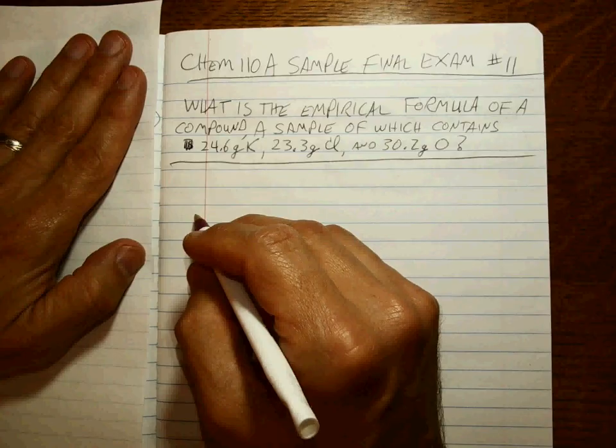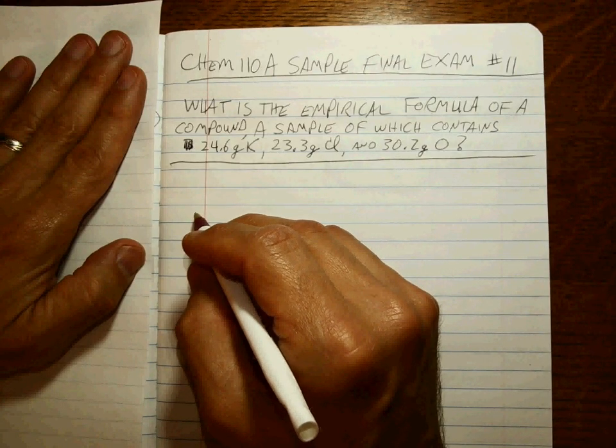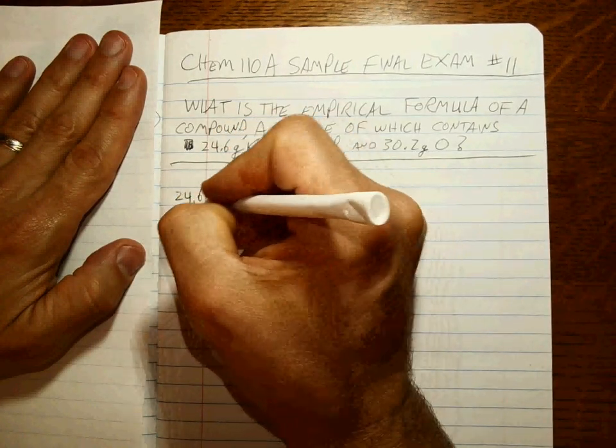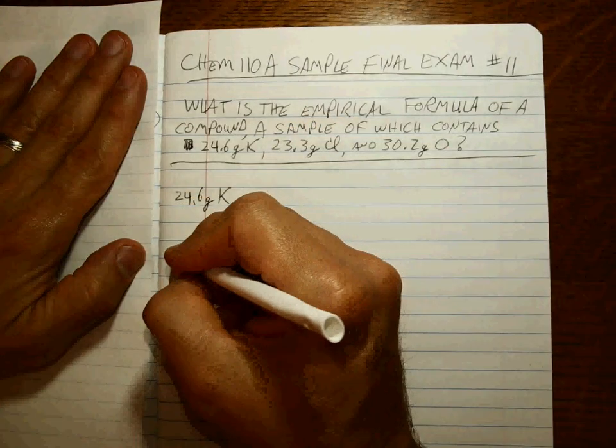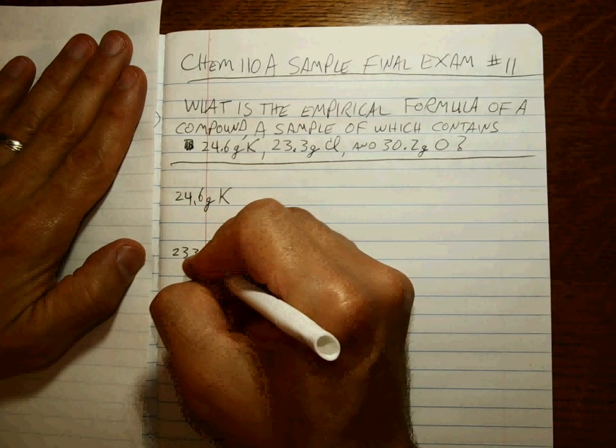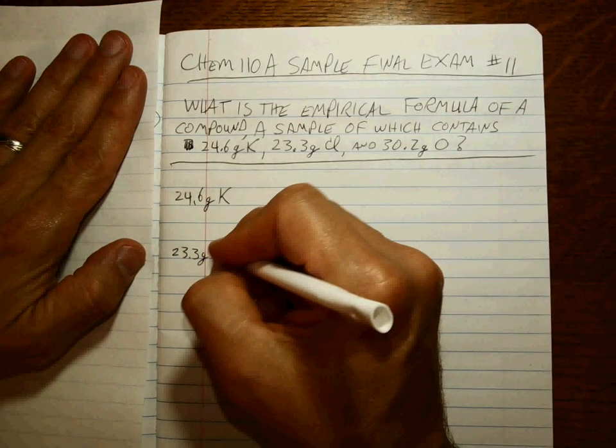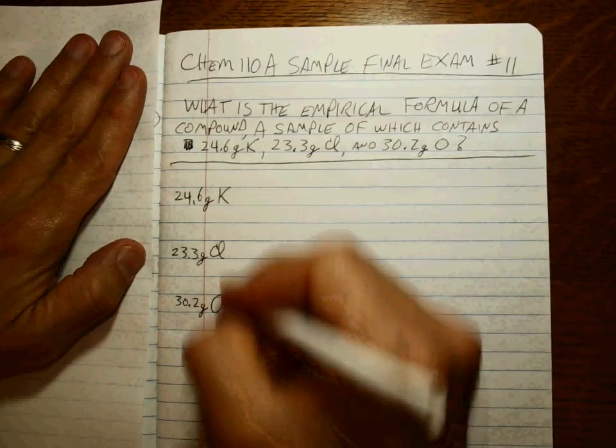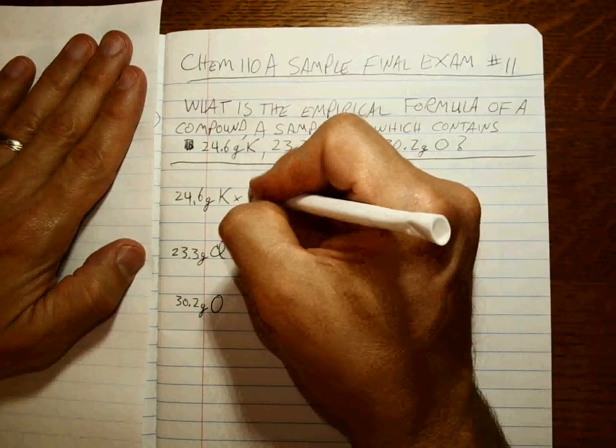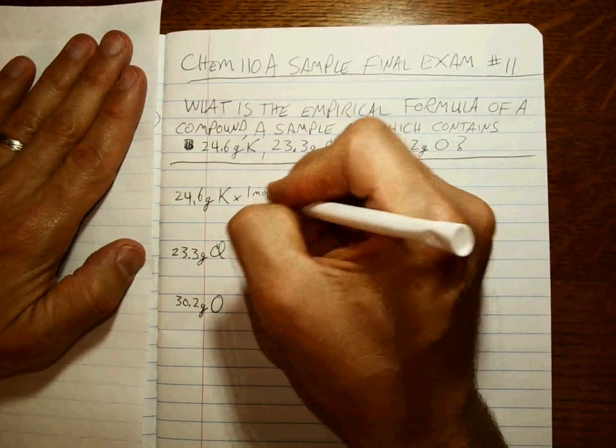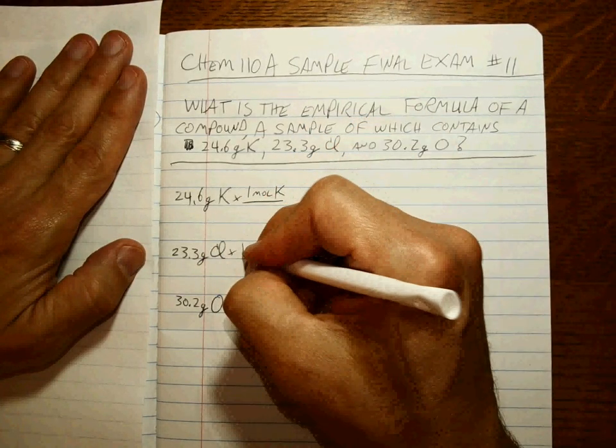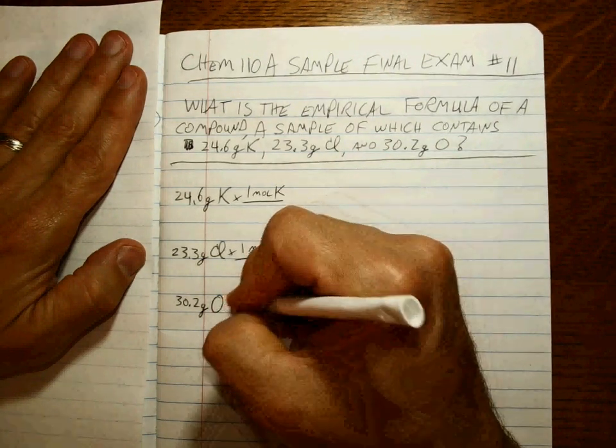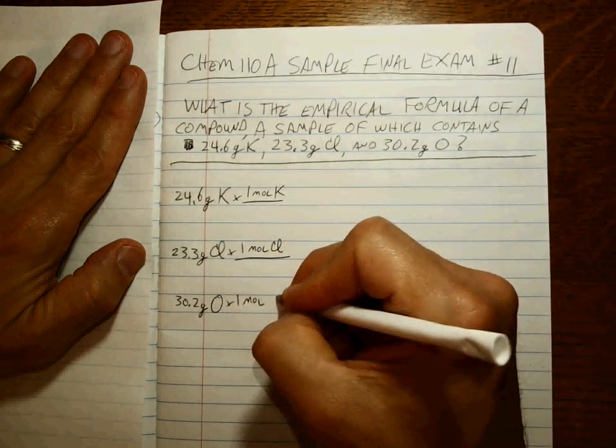So 24.6 grams of K, 23.3 grams of Cl, 30.2 grams of O. Multiply by one mole over the molar mass of each. You know by now that oxygen is 16 grams, you probably remember that chlorine is 35.45, which is close enough for 35.5.